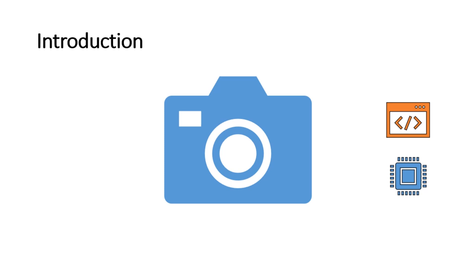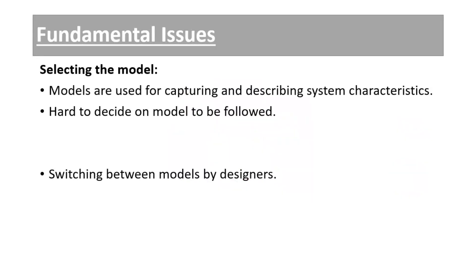During the system design phase and the subsequent architecture design phase, we are going to face a lot of issues because of the co-design process. It is better to discuss the fundamental issues in hardware-software co-design. The first fundamental issue in hardware-software co-design is selecting the model.